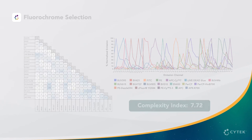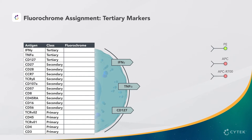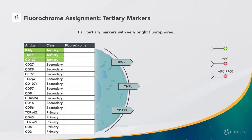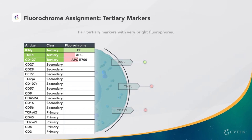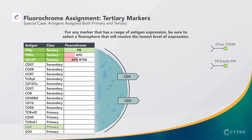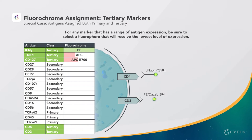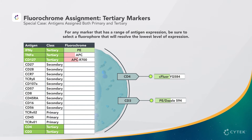Now we're ready to design our panel. We'll start with the tertiary antigens, because they usually have limited reagent availability, and it's critical to pair them with very bright fluorochromes. If we select a fluorophore that is too dim, we will not be able to resolve the low-density marker in both the single-color controls and the multicolor samples. Remember that for this panel, we categorized CD3 and CD4 as tertiary markers in the stimulation condition. For any marker that has a range of antigen expression, be sure to select a fluorophore that will resolve the lowest level of expression. Based on this, we will assign CD3 and CD4 to bright or mid-bright fluorochromes.